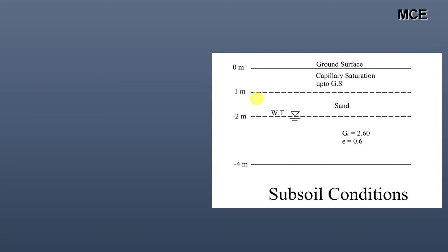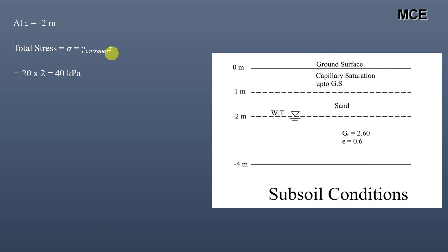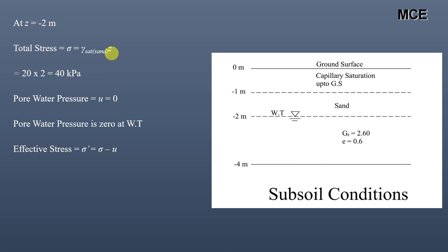At Z = 2 meters depth: total stress = γ_sat × Z = 20 × 2 = 40 kPa. Pore water pressure at this depth is 0. Always remember that at the top of the water table, pressure is atmospheric, meaning pore water pressure is always 0 at the water table. Effective stress = total stress − pore water pressure = 40 kPa.